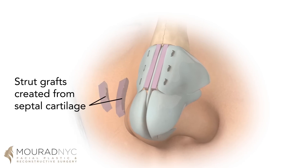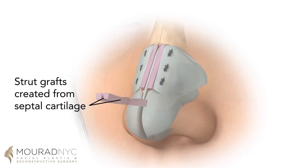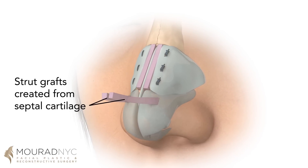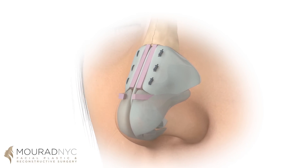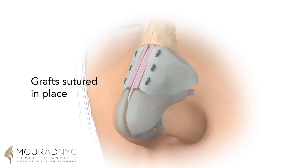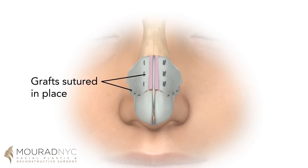Strut grafts are placed on the undersurface of the nasal tip cartilages, reinforcing them and allowing them to bend less during nasal inspiration. The external nasal valves are strengthened through what are known as strut grafts.